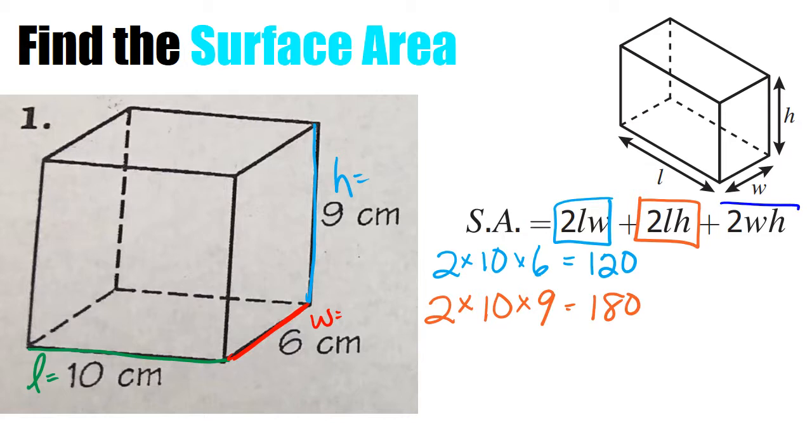Let's do this third part, 2 times width times height. So I do 2 times my width is 6 and my height is 9. So when I do this, I do 2 times 6 gives me 12 times 9 gives me 108.